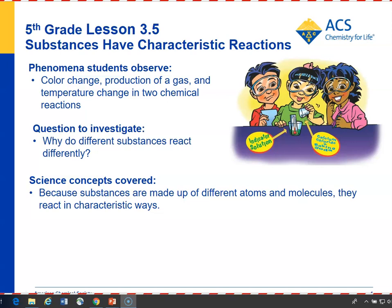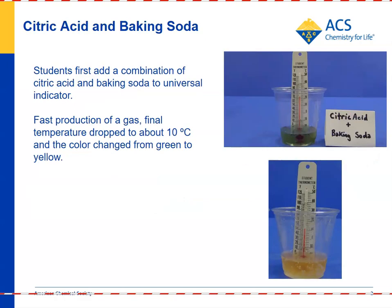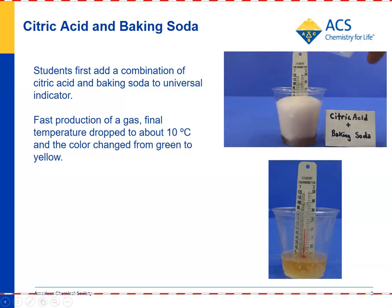Students will conclude that since different substances are made up of different molecules, they interact and react chemically in characteristic ways. First, you would make up enough indicator solution so that all the groups can have enough to do the experiments. The students put an amount of indicator solution in a cup, add a thermometer, and then add a combination of citric acid and baking soda to see the reaction.